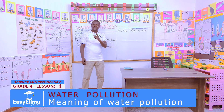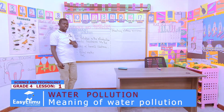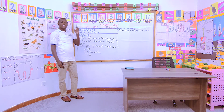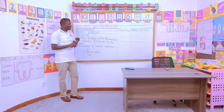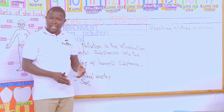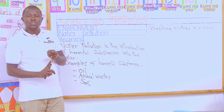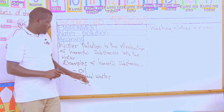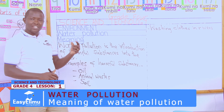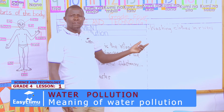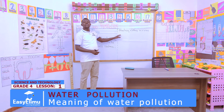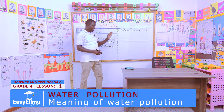So we have said water pollution is the introduction of harmful substances into the water sources or water bodies. These harmful substances contaminate the water, making it not safe to use for either cleaning or drinking. For example, when there is heavy rain and soil is taken to the river, the water changes color and you can neither wash clothes nor drink it. Other examples include plastic bottles — when you throw them into water, you also contaminate that water.